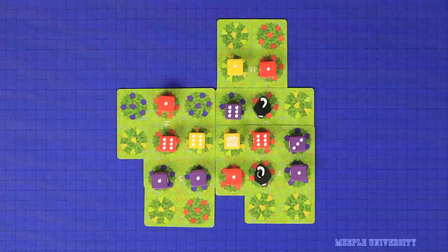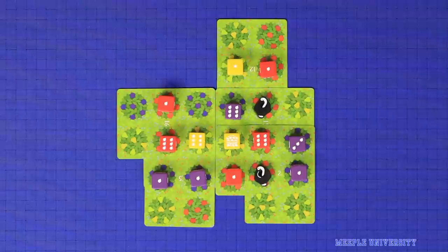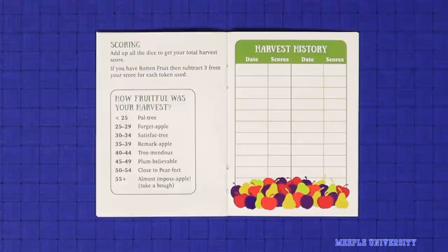Then count up your score. Simply add up all of the pips on the dice you've placed and deduct 3 points for each rotten fruit you've placed. For example this score here is 38. Then compare your score against this table of amusing fruit puns in the rulebook.